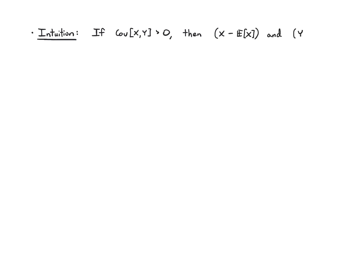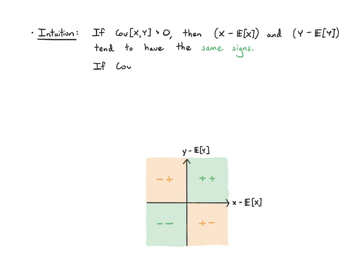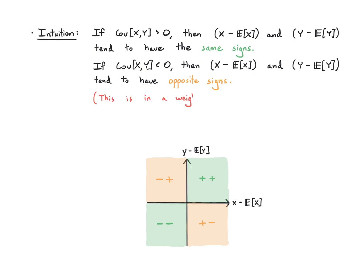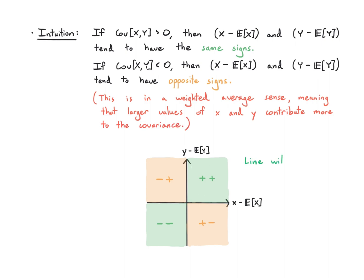Intuitively, if the covariance is positive, then x minus its mean and y minus its mean tend to have the same signs. Visually, they tend to occupy the green quadrants: plus-plus and minus-minus, so the linear relationship has a positive slope. If the covariance is negative, x minus its mean and y minus its mean tend to have opposite signs, living in the orange quadrants: minus-plus and plus-minus. This is in a weighted average sense — larger values of x and y contribute more even if they have lower probability.